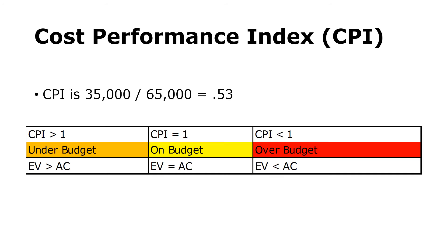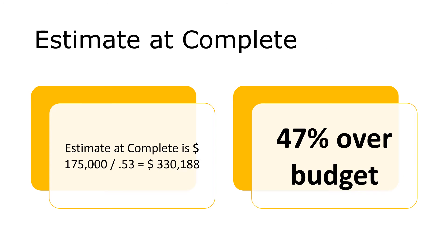The CPI, or Cost Performance Index, gives a measure of efficiency. It shows how efficiently you are actually spending your budget dollars compared to how efficiently you planned to spend them. It is calculated by dividing earned value by actual cost. In our example, CPI = $35K divided by $65K = 0.53. A CPI of 1 indicates you are spending your budget to accomplish work at the rate you planned. A CPI less than 1 means you are over budget — you are spending your budget less efficiently than planned. The Estimate at Complete is the forecast of the total amount needed to complete the planned work, based on actual work completed. The easiest calculation is to divide the total budget by the Cost Performance Index.